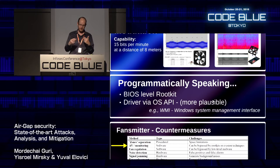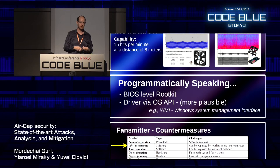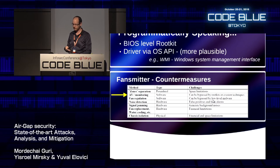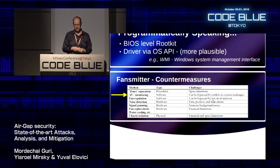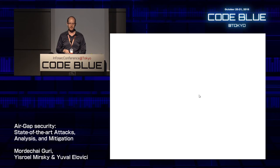Programmatically, you can affect fan speeds through the BIOS or more easily through the OS driver API — for example, using WMI (Windows Management Interface) in Windows. Countermeasures: zone separation, antivirus monitoring, regulating fan speeds, noise detection, replacing fans with water cooling, and insulation to mitigate noise. In a demo, a phone placed next to a workstation picks up hexadecimal values transmitted via fan speed fluctuations — and this even works while music is playing in the same room.